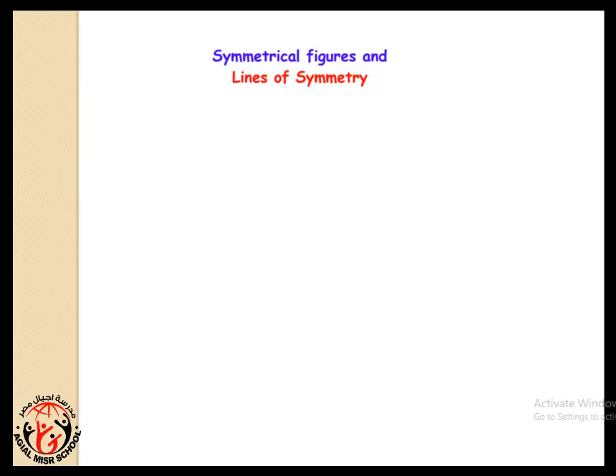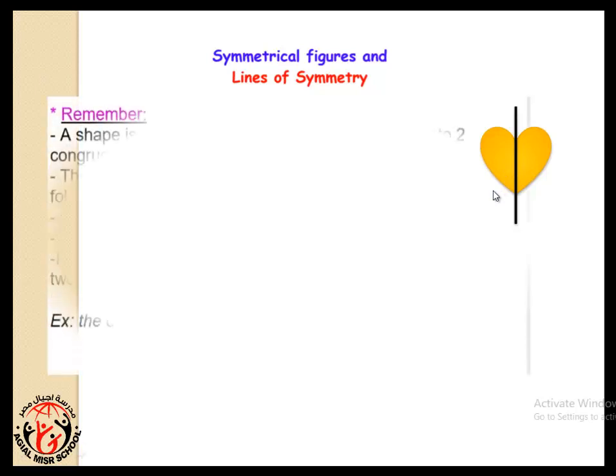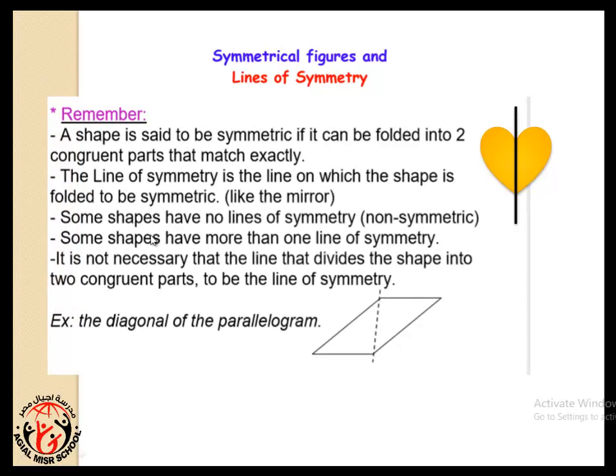First, we should know the meaning of symmetrical figure. This means any figure that can be folded around a line or divided into two congruent shapes, as a heart. This line divides this heart to two congruent parts without moving these parts. So, the line of symmetry means the line which divides one shape or one figure to two congruent shapes.